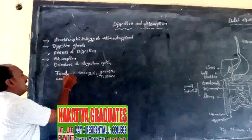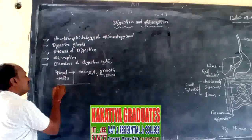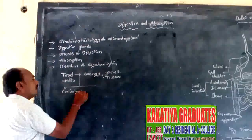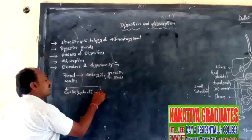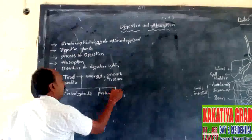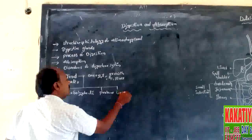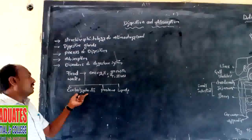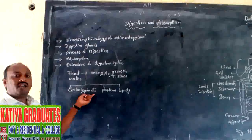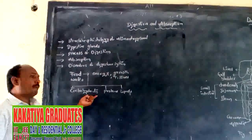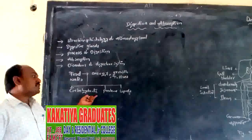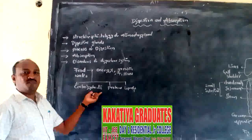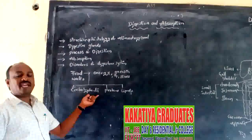Food is categorized into three kinds: carbohydrates, proteins, and lipids. These three components are called macronutrients, which are present in an unabsorbable, complex form. These complex substances are converted into simple absorbable form in the presence of mechanical and chemical processes.